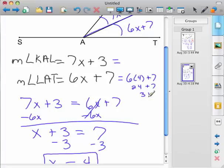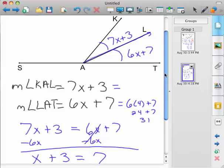Okay, so we know LAT is 31 degrees. So this is 31 degrees. We also know that KAL is 31 degrees, because AL is a bisector. And together, we've got 62 degrees.